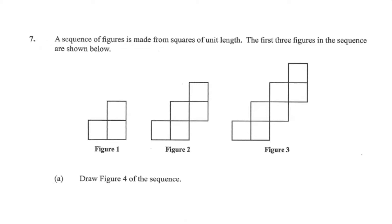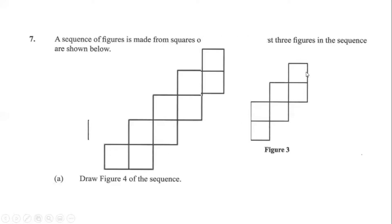Therefore, we know that figure 4 would be similar to figure 3 with an additional two squares attached. So the fourth figure will have 9 squares.